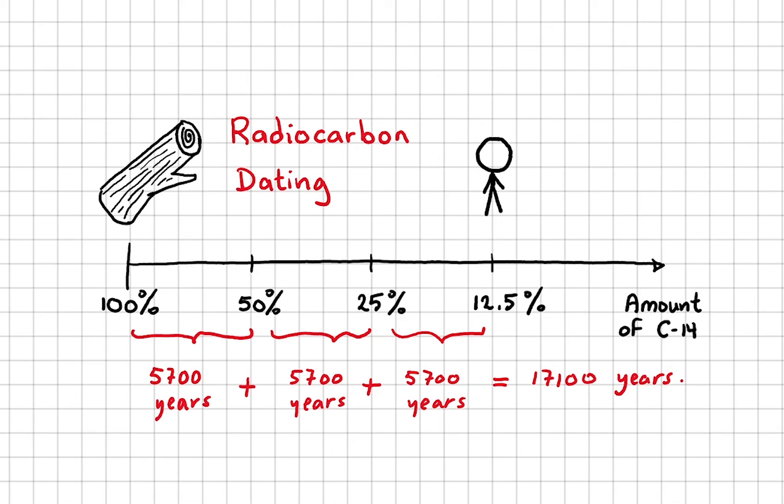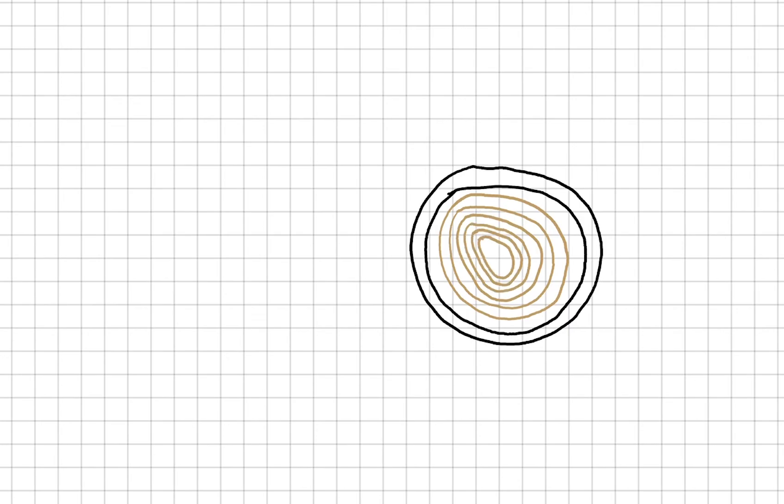But you might still be wondering, how do we know how many carbon atoms there are in an object? Can we use a microscope? Nope. It's not powerful enough to see atoms. Can we grind down the object and investigate its chemical structure? Maybe it's not such a good idea to grind down a $6,000 antique.